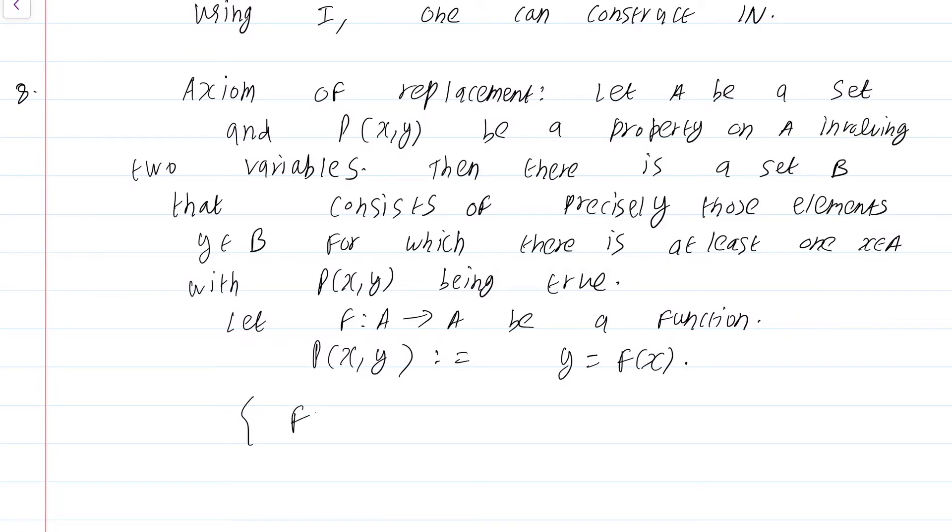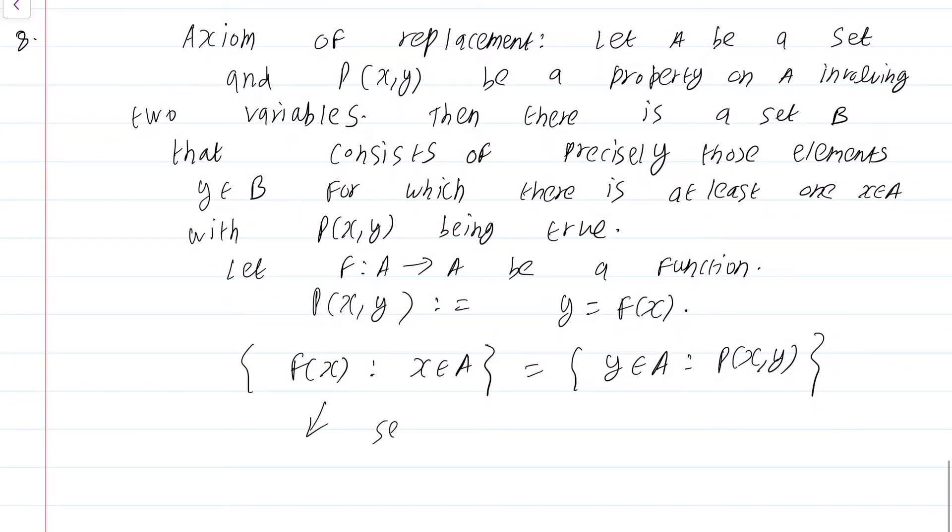Then, what this axiom asserts is that {f(x) such that x is in A}, which is exactly same as those elements y in A such that p of x, y is true, this is a set. So, essentially what I have done is, I have replaced the variable x by its image variable y. In that sense this is called the axiom of replacement. This also says that any function that I can apply to a set will still give me a set, that means, the image of all functions are sets. I think now it should be clear what Halmos's quote is trying to say.